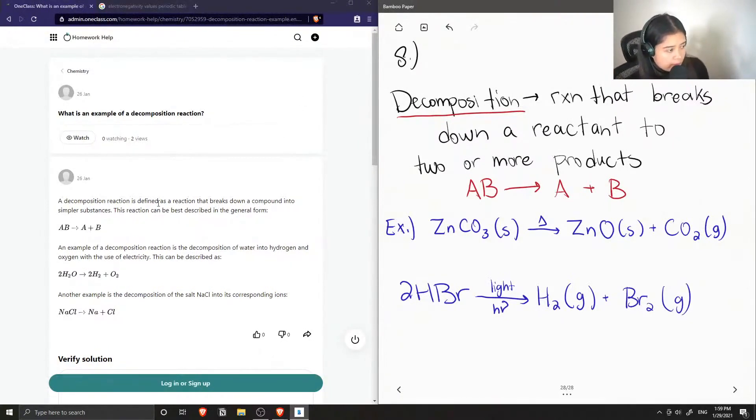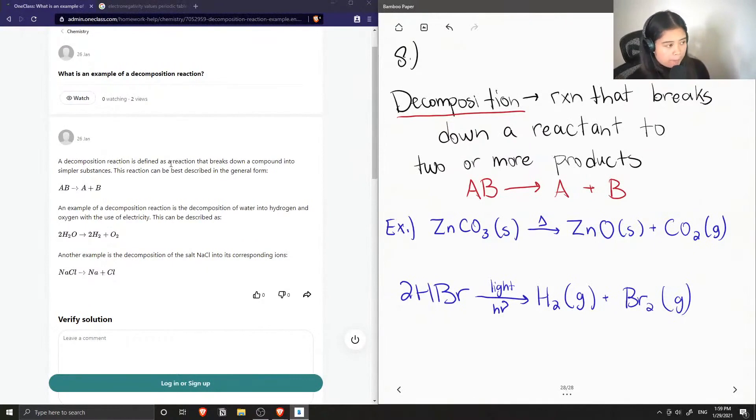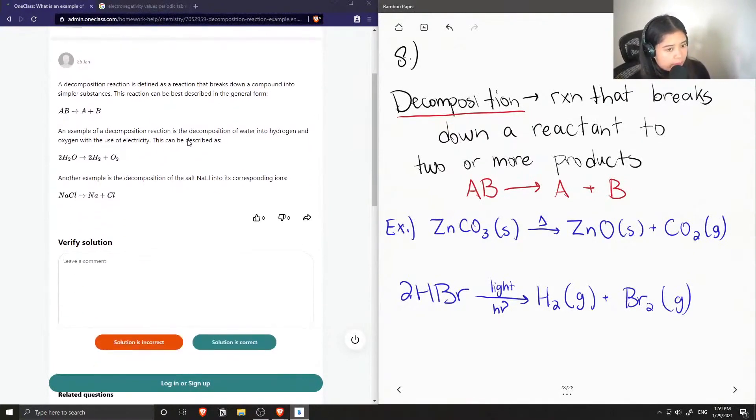And the junior tutor said that it's defined as a reaction that breaks down a compound into simpler substances. This reaction can be best described in general form. Okay, and an example of decomposition reaction is the decomposition of water into hydrogen and oxygen with the use of electricity. So 2H2O makes 2H2 plus O2.